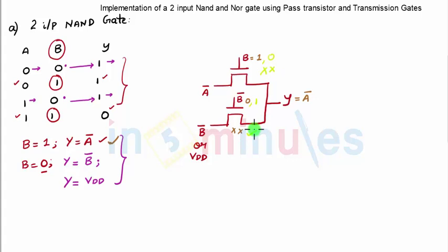When B is equal to 0, B bar is equal to 1, that means this transistor is off, this is on. And when B is equal to 0 or B bar equal to 1, I want Y equal to either B bar or VDD, any of the one which we can take. This is a correct representation of a 2-input NAND gate using pass transistors.